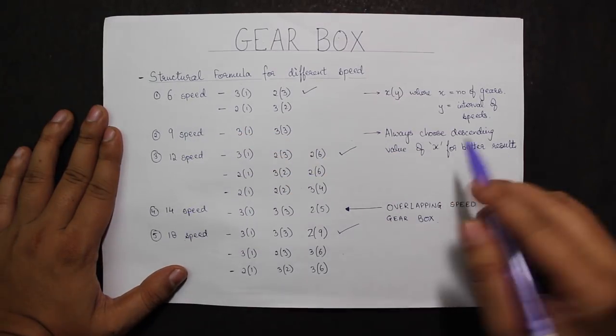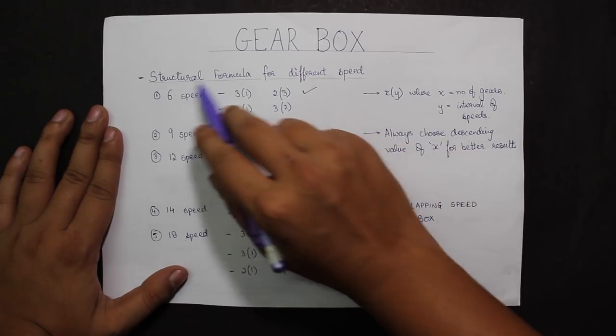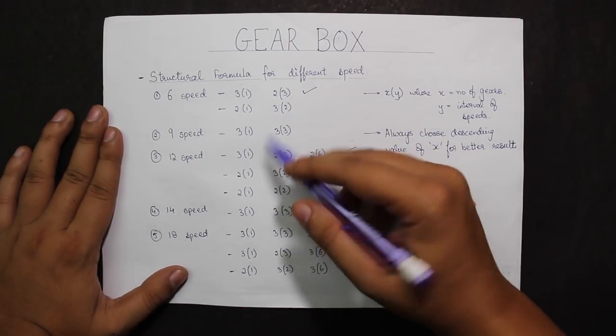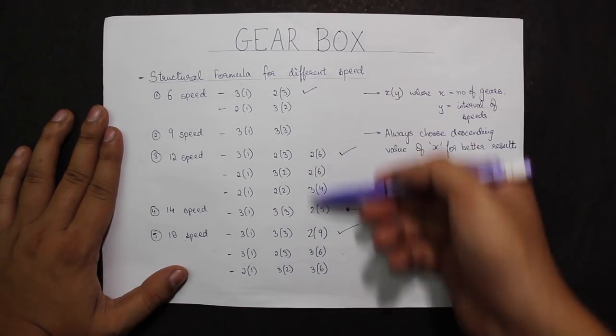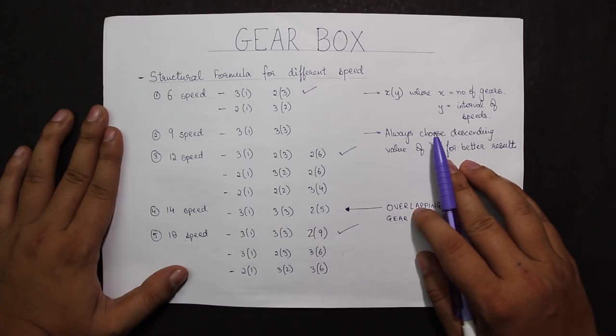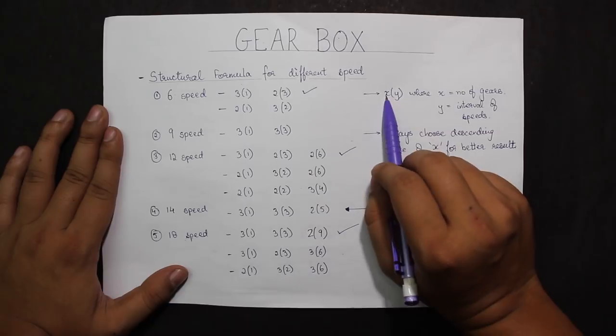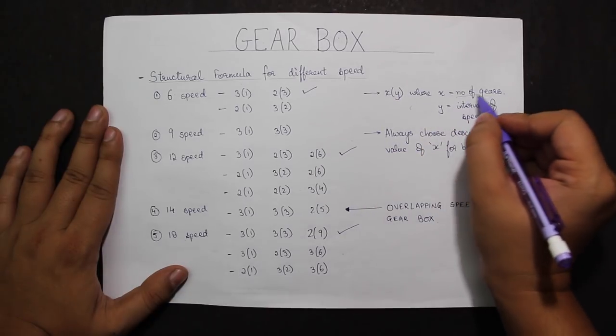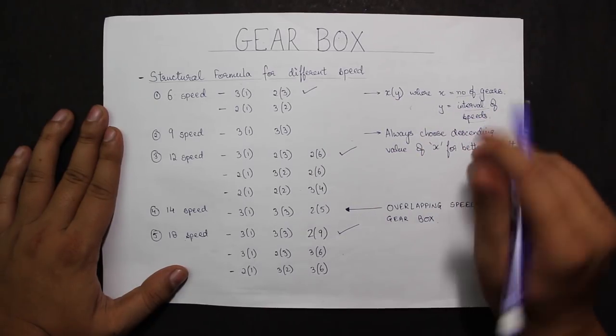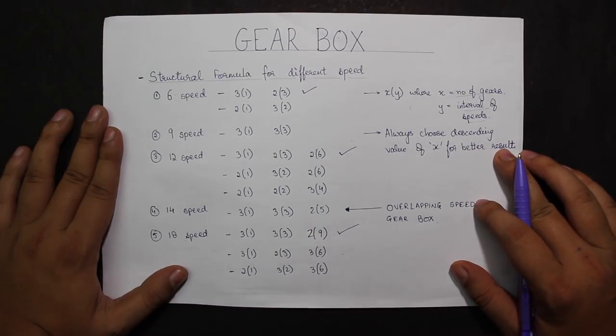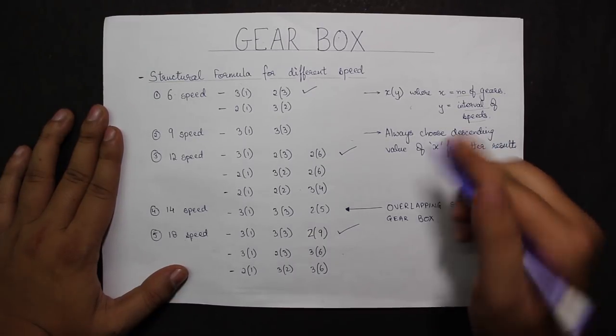The structural formula for designing each of these gearboxes is given here. We have a unit called X and a unit called Y, where X is the number of gears and Y is the interval of speeds. According to the arrangement, we can have a number of combinations to achieve the final stage.